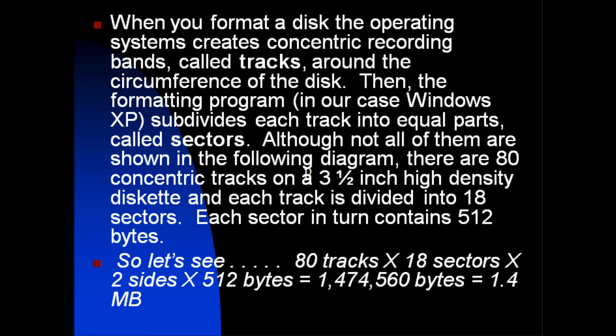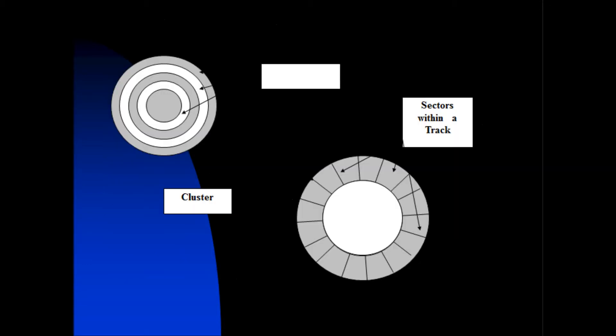When you format a disk, the operating system creates concentric recording bands called tracks around the circumference of the disk. The formatting program then subdivides each track into equal parts called sectors. There are 80 concentric tracks on a 3.5-inch high-density disk, and each track is divided into 18 sectors. Each sector contains 512 bytes. So: 80 tracks × 18 sectors × 2 sides × 512 bytes = 1,474,560 bytes, which equals 1.4 MB.